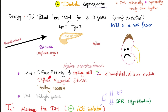Under light microscopy: diffuse thickening of the capillary wall, hyaline arteriolosclerosis, Kimmelstiel-Wilson nodules, diffuse mesangial sclerosis, and papillary necrosis. Electron microscopy might show podocyte fusion. How do I manage this? This is a secondary disease, so you manage the underlying condition — diabetes. Add ACE inhibitors for two reasons: they lower blood pressure, and they decrease the hyperfiltration injury to protect the kidney.